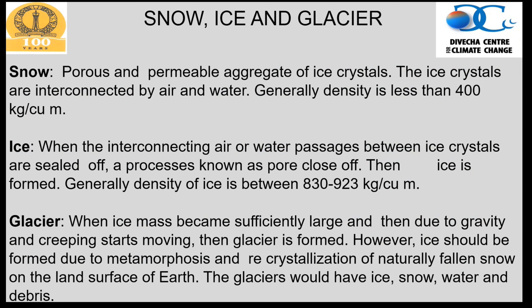Snow is a porous and permeable aggregate of ice crystals interconnected by air and water. If it is dry snow, small crystals are present with air in between. If it is wet snow, that space is partially occupied by water. The density of snow is generally less than 400 kg per cubic meter.